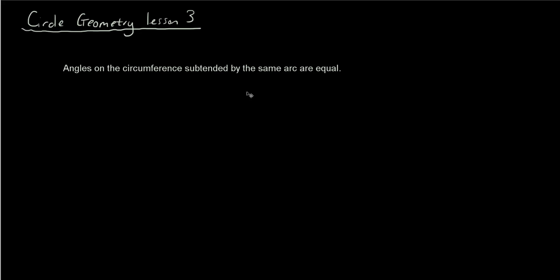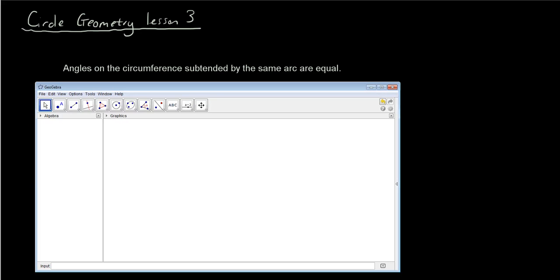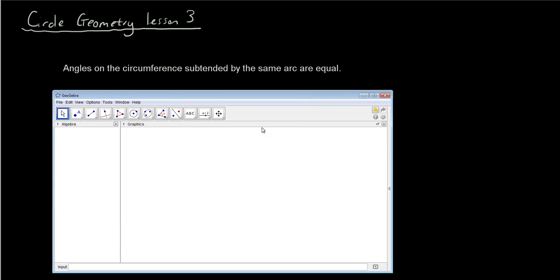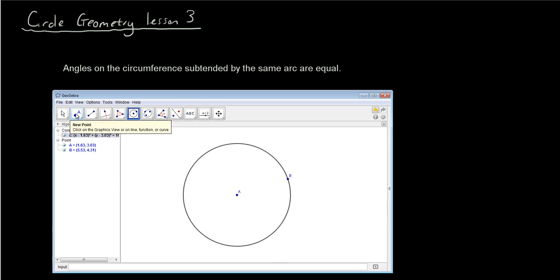Now I'm going to draw this situation in GeoGebra so you can see what this rule means. I'll create a circle with two points that define where my arc is. Between point C and point D is my arc.